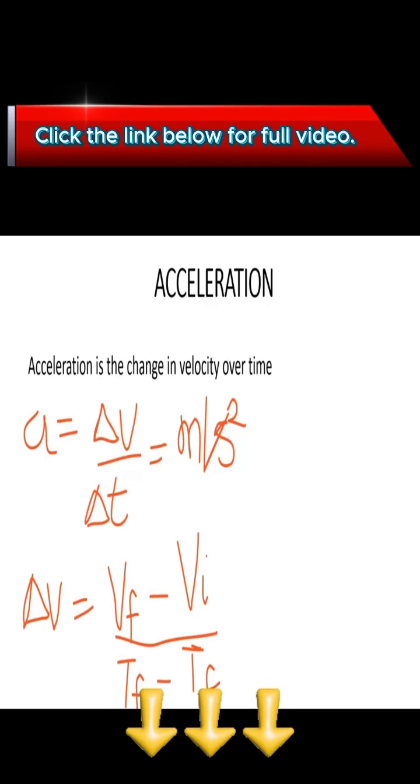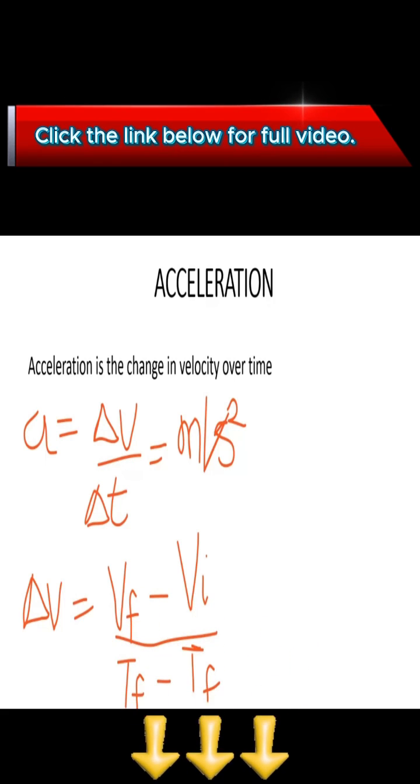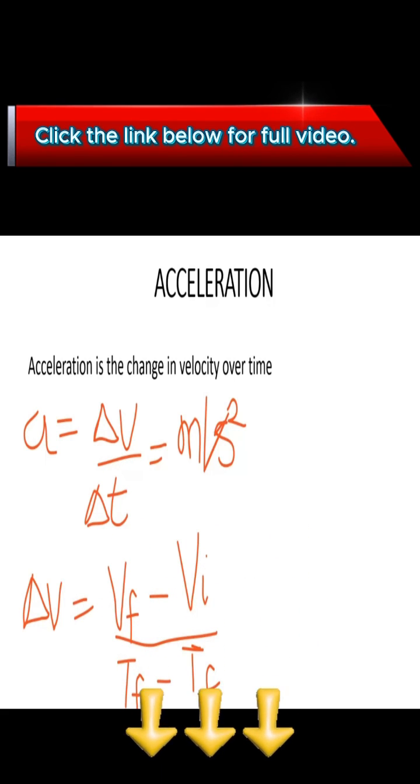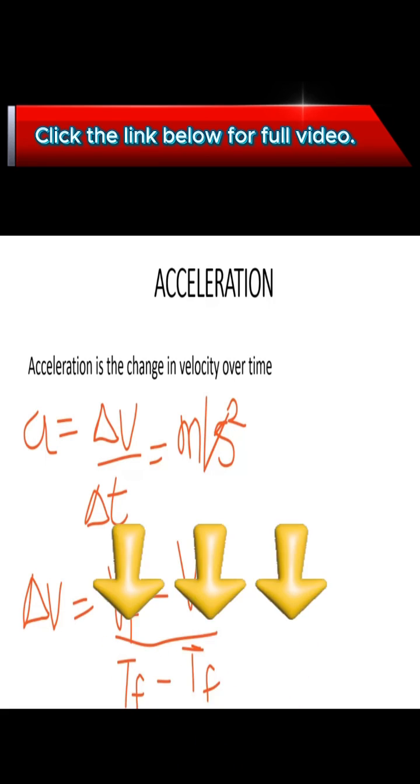For instance, a car traveling around a circular racetrack is constantly accelerating if the car's speed is constant because the direction of the car's velocity vector is constantly changing. The velocity changes too. If you change your direction, you change your velocity and it affects the acceleration.